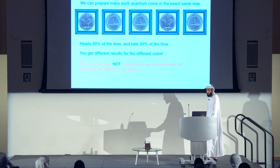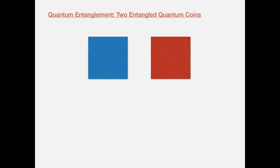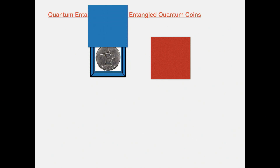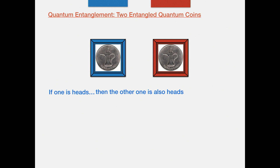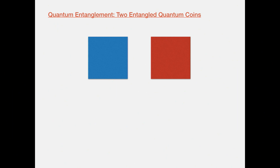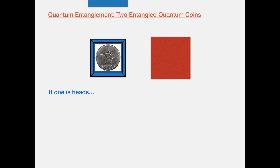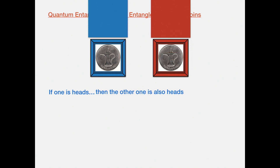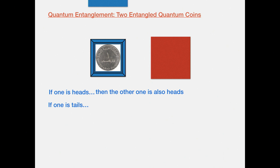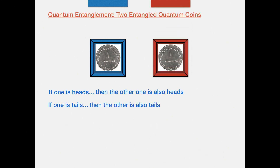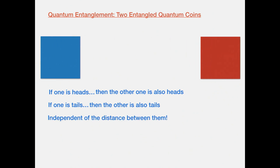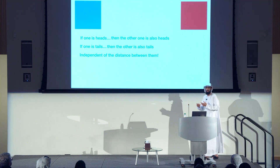Then there is quantum entanglement. Consider two entangled quantum coins: one inside the blue box and one inside the red box. What does it mean for them to be entangled? If you open the first one and find heads, then when you open the second one, you'll also find heads. There's a 50% chance you find heads in the first one; once you do, there's a 100% chance the second will also be heads. Similarly, if the first is tails, the second will also be tails. Something weird about this is that it's true independent of the distance between the two quantum coins — you can have one in Abu Dhabi and one in New York.